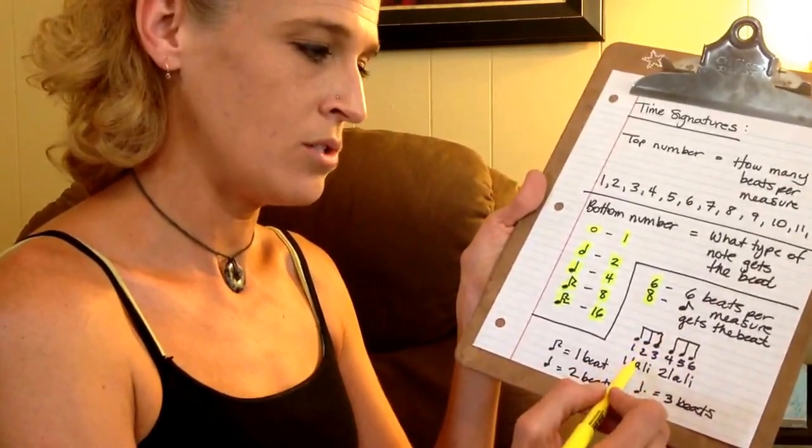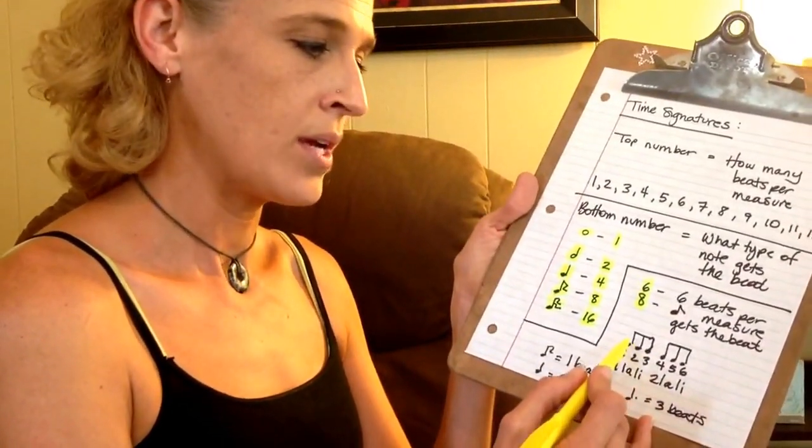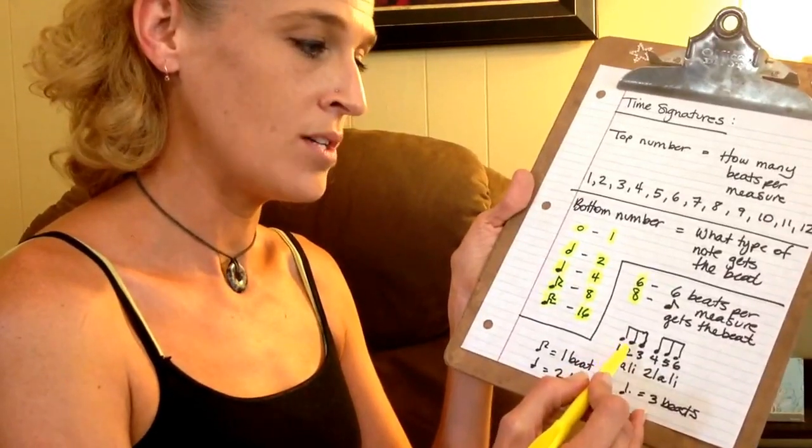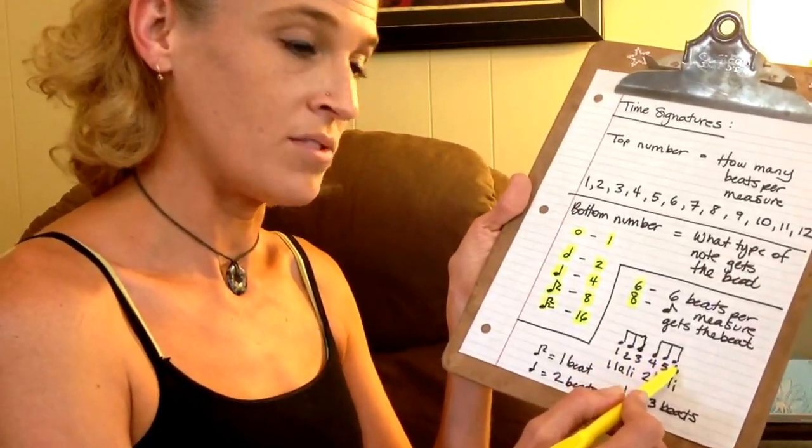You can count it two different ways. It's compound meter. You can count each eighth note: 1, 2, 3, 4, 5, 6.